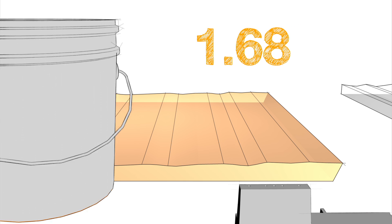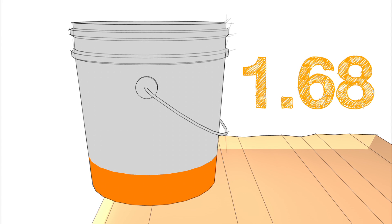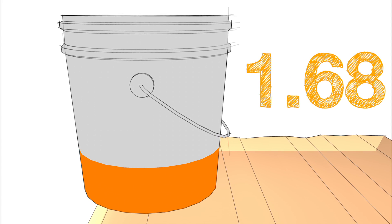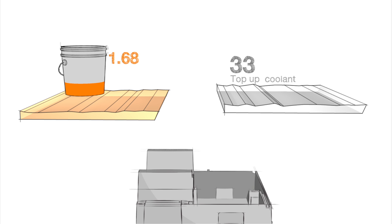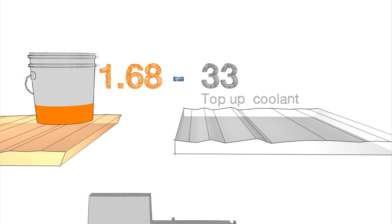So we need an additional 1.68 gallons of concentrate to fix the existing 42 gallons. Now we'll subtract the 1.68 gallons from our starting 33 gallon top-up total since it's part of what we're going to add to the tank. This gives us an adjusted top-up coolant value of 31.32 gallons.